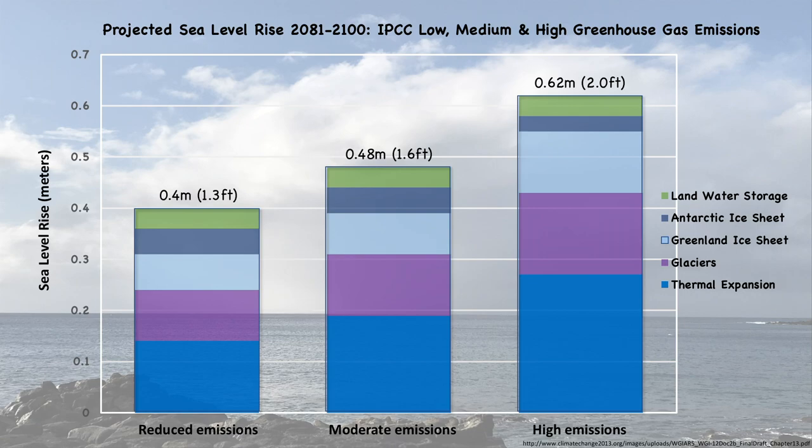These are projections from the Intergovernmental Panel on Climate Change for Sea Level Rise by the year 2100. You can see that they range from about 1.3 to 2 feet.